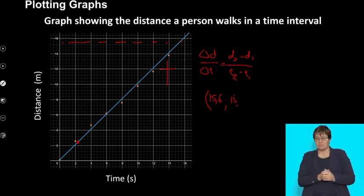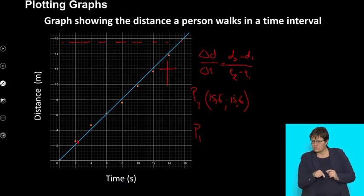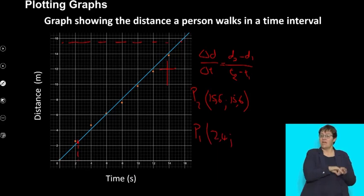So those two points, 15.6, 15.6, that is the second point. What about the first? Well, the first is all the way down here and I'm going to just estimate that that's going to be about there which is 2.4 and the value on this side is also 2.4. So we're now going to plug those values into that equation and we're going to get the gradient calculation.